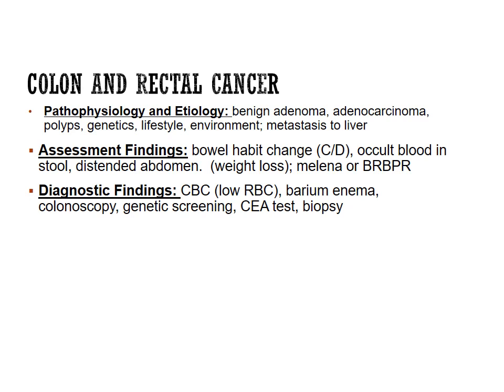The patient may have a distended abdomen and weight loss — all cancers produce some degree of weight loss. They may also have melena or bright red blood per rectum (BRBPR). Melena is the blood-tinged stool that appears maroon in color. Lab work may show low red blood cells from chronic slow blood loss and low hemoglobin if significant blood has been lost.